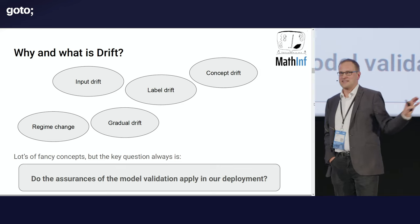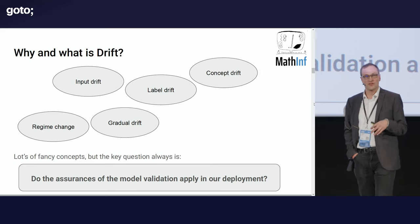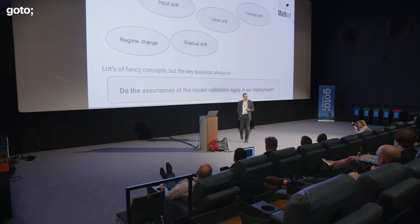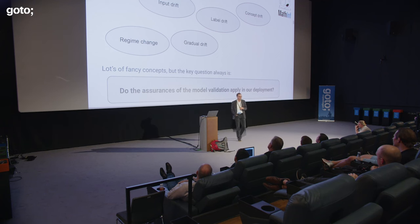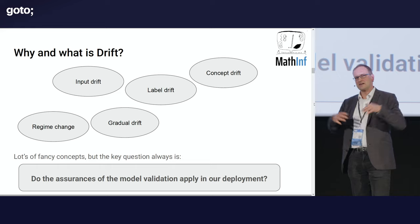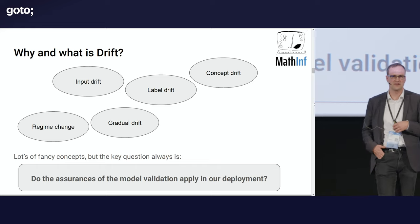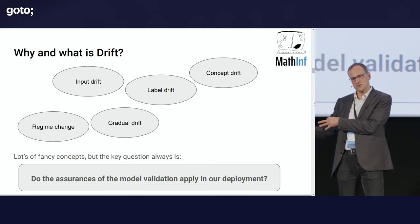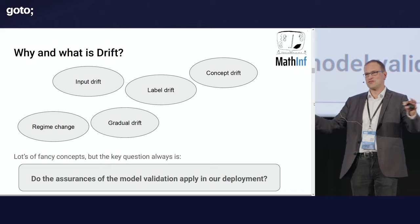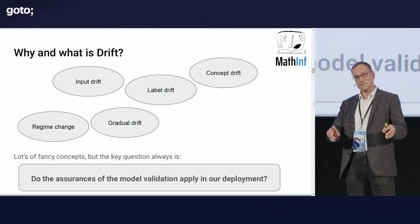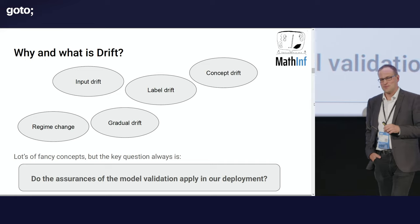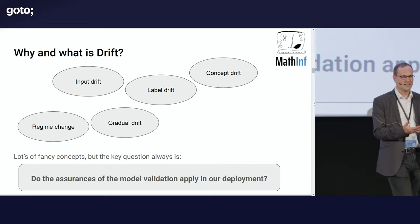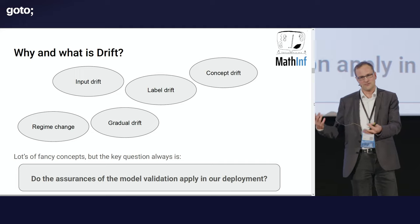I've told you the answer is drift detection, but I didn't quite tell you what that is. So who knows what drift is? People make a whole scientific classification out of this. They distinguish input drift where the inputs change, label drift where the outputs change, and concept drift where the inputs and outputs are the same but the right answers get mixed up. This can happen gradually or suddenly — then it's a regime change.